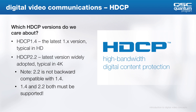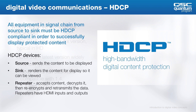There are three types of devices in an HDCP link: the source, the sync, and the repeater. The source and the sync are pretty self-explanatory; however, the repeater accepts content, decrypts it, and then re-encrypts it and retransmits the data. Repeaters have HDMI inputs and outputs.